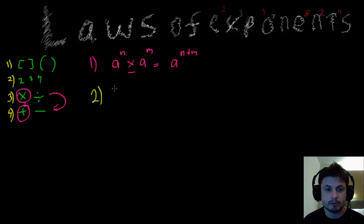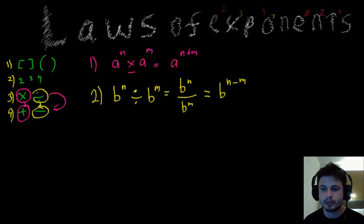Now imagine there's another number B that has an exponent N, but this time it's actually divided by a number B that has an exponent M. In other words, B to the N divided by B to the M. What do you think happens then?